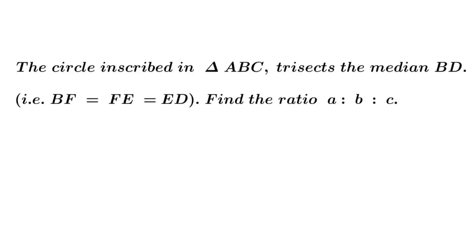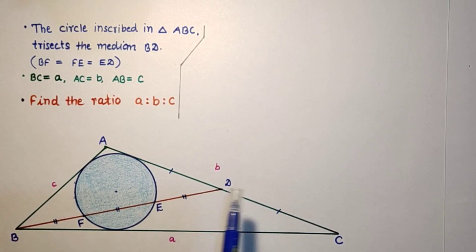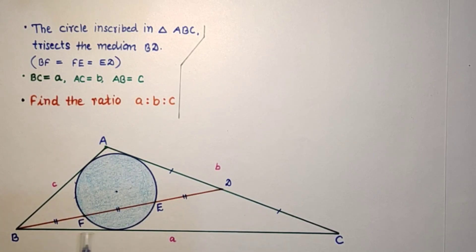Hello friends, dear students and respected viewers. Today's question is: the circle inscribed in triangle ABC trisects the median BD, that is BF equals FE equals ED. Find the ratio A to B to C. This inscribed circle trisects the median BD, and the circle touches all 3 sides.